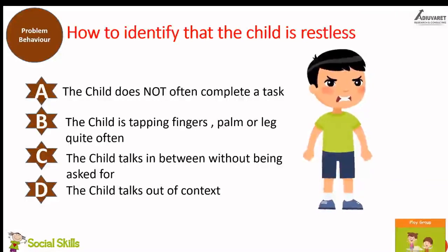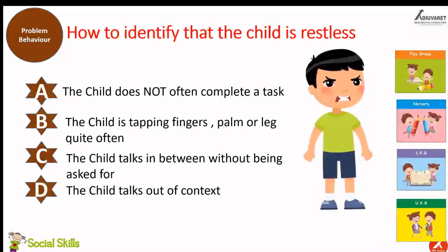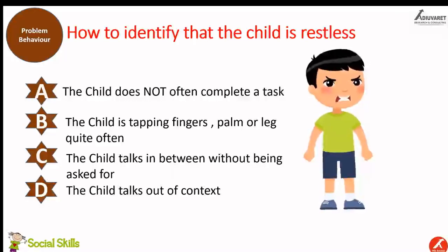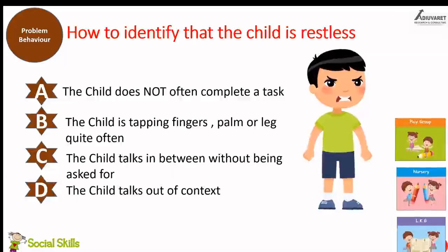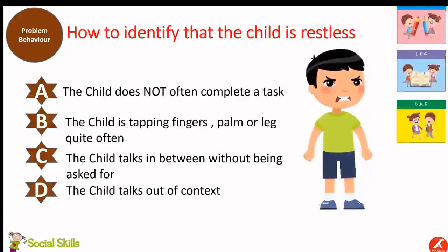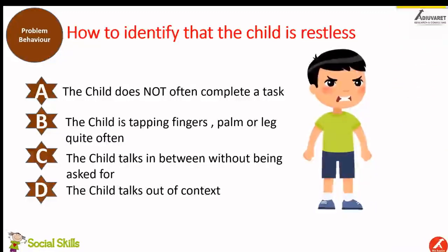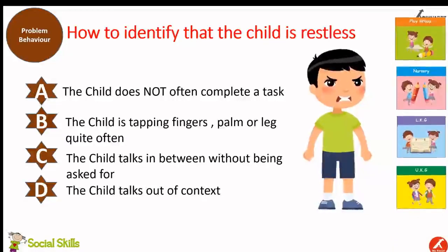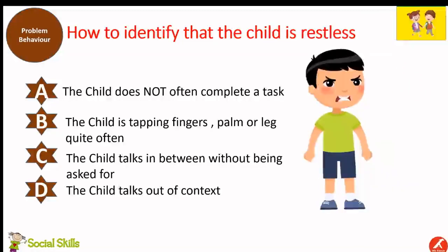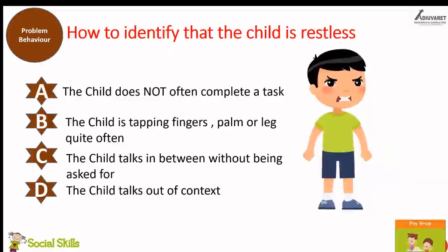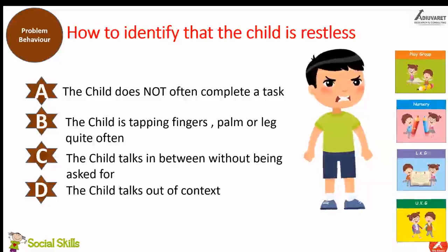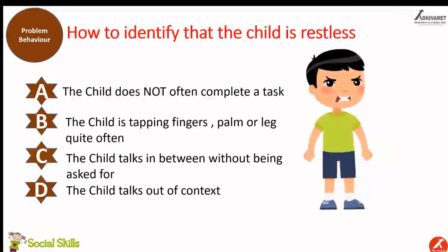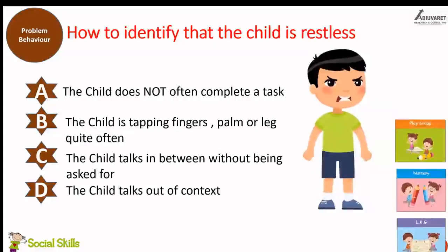Another symptom is that the child talks out of context. If a particular subject is being discussed and the child talks much about that subject, it indicates the child knows the subject well. But if the child is restless, they will try to say anything to release internal restlessness, and those things will be out of context — unrelated to the subject being discussed in that situation.